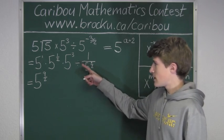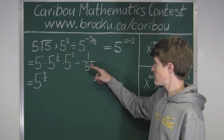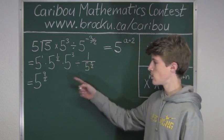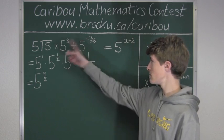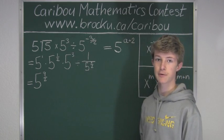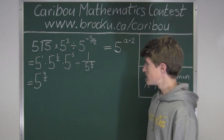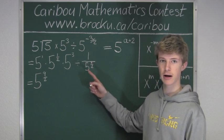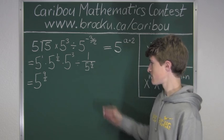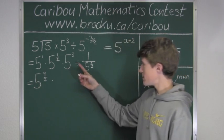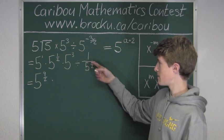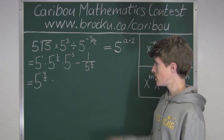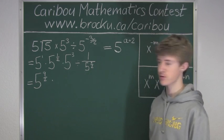Now we have divided by 1 over 5 to the power of 3 over 2. But we don't want to divide, we want to multiply because we want to rewrite the left side as a product of powers of 5. We know that to divide by a number, we can just multiply by its inverse. So instead of dividing by this, we will multiply by the inverse of 1 over 5 to the power of 3 over 2, which is just 5 to the power of 3 over 2.